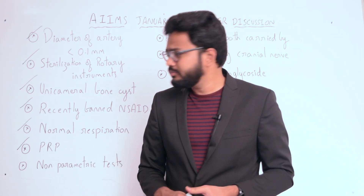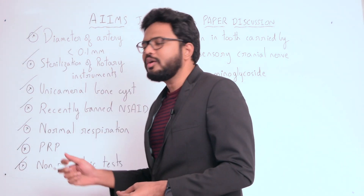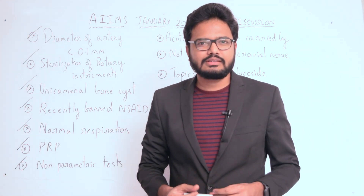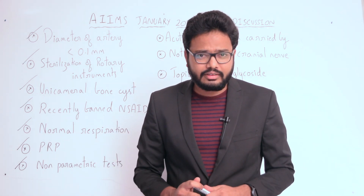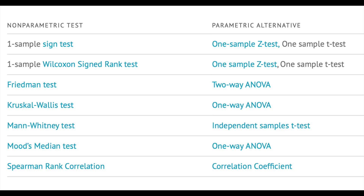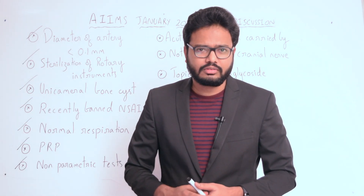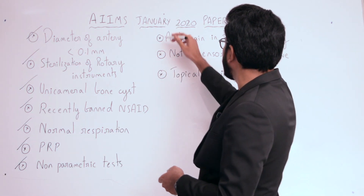Moving on to non-parametric tests: we have various parametric and non-parametric tests with equivalent alternatives as shown in the table. Examples of non-parametric tests include the chi-square test, Fisher's exact test, and Mann-Whitney test. The table also shows non-parametric tests alongside their equivalent parametric alternatives.